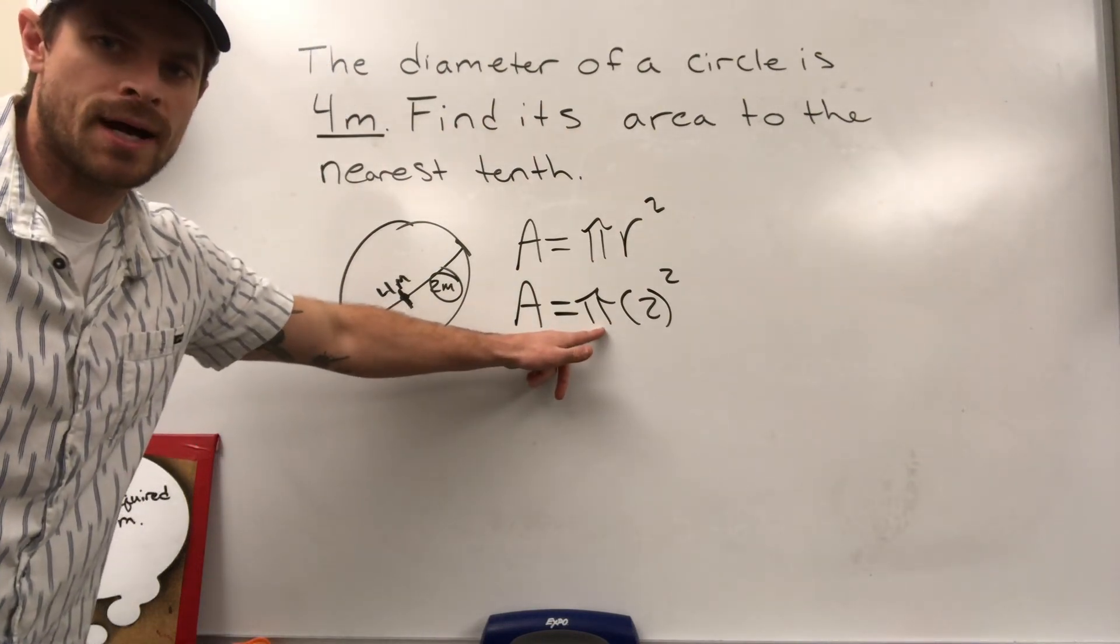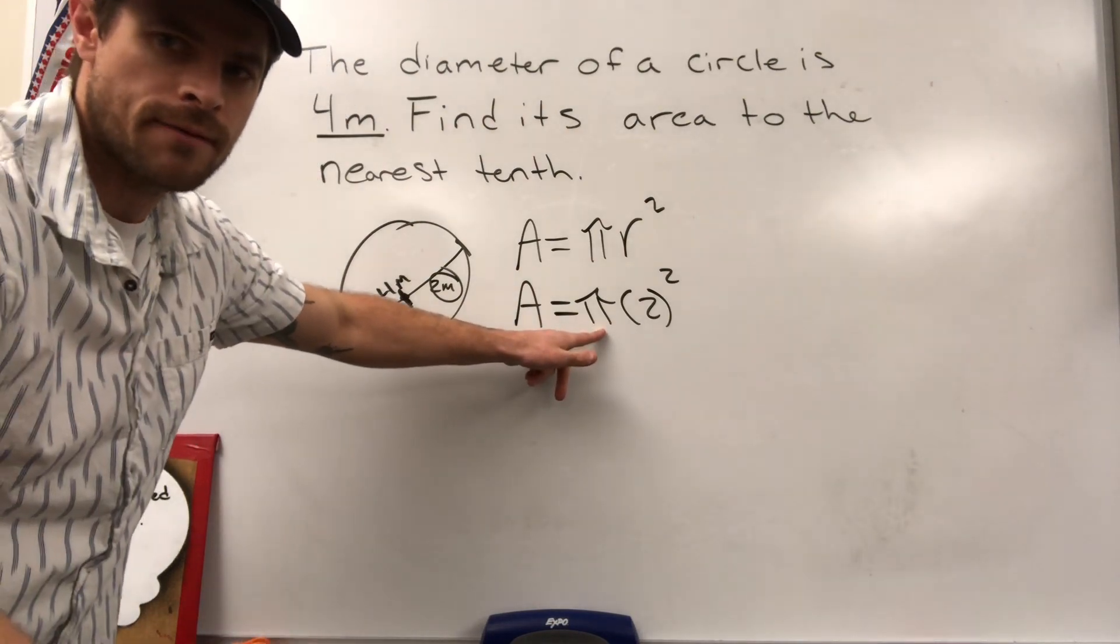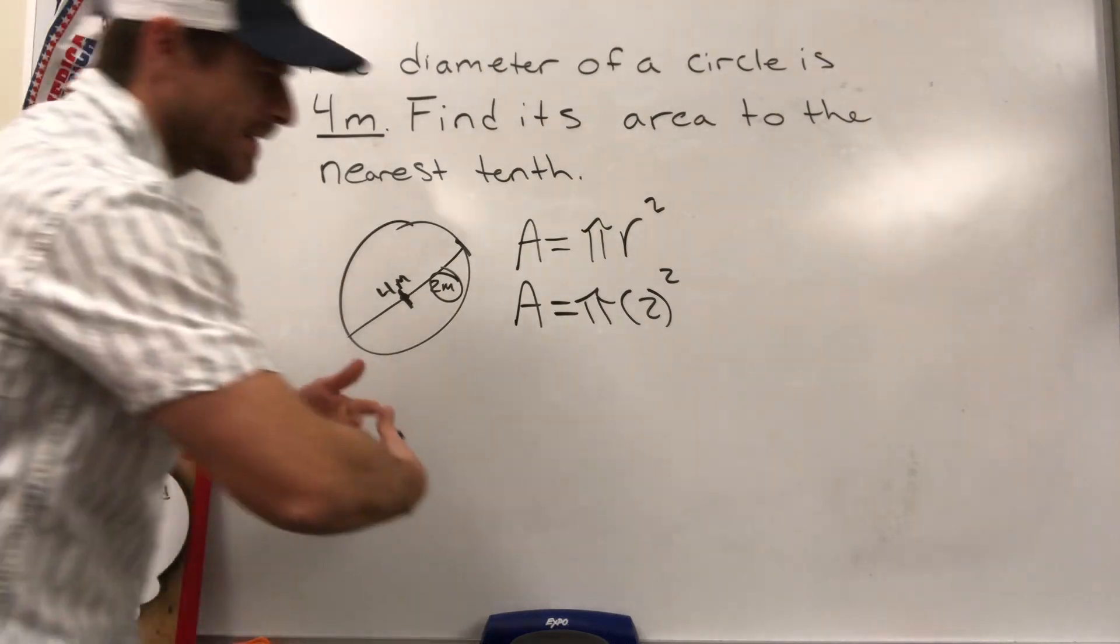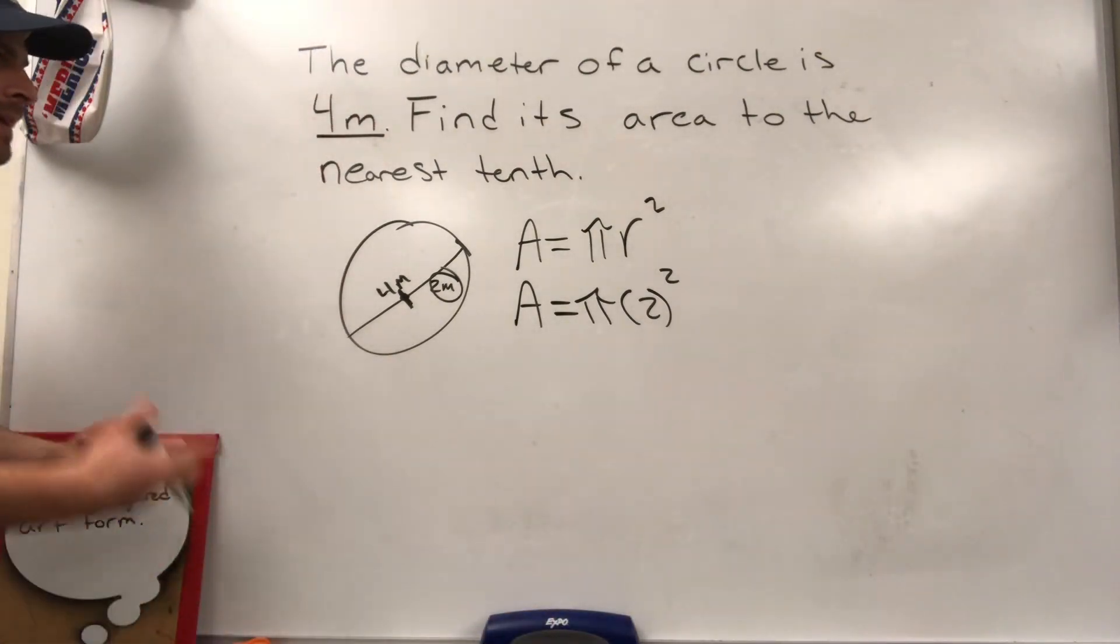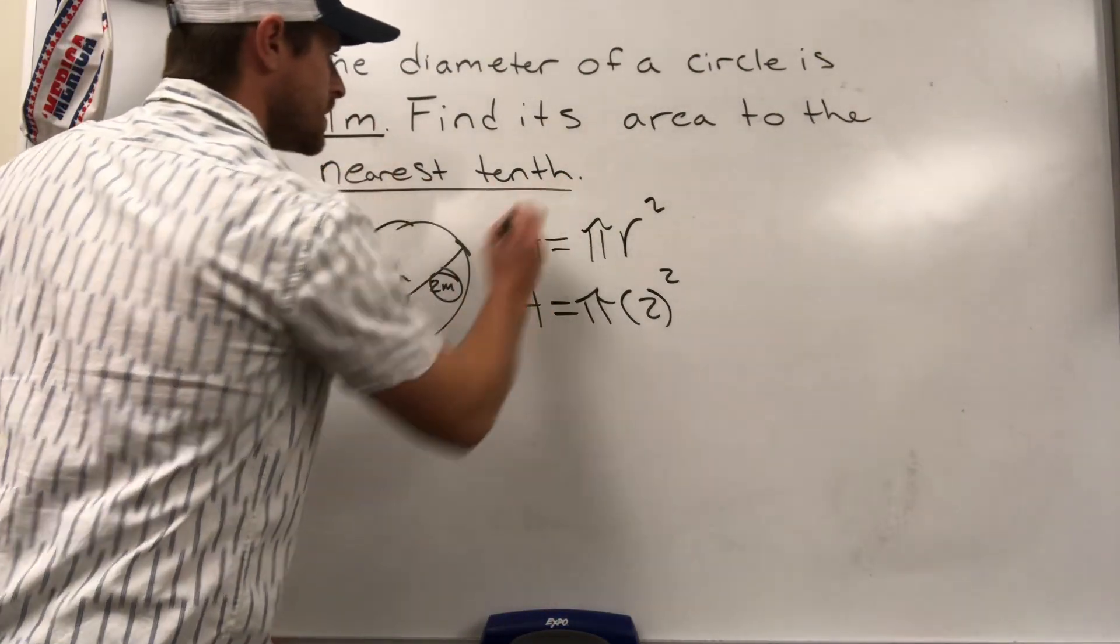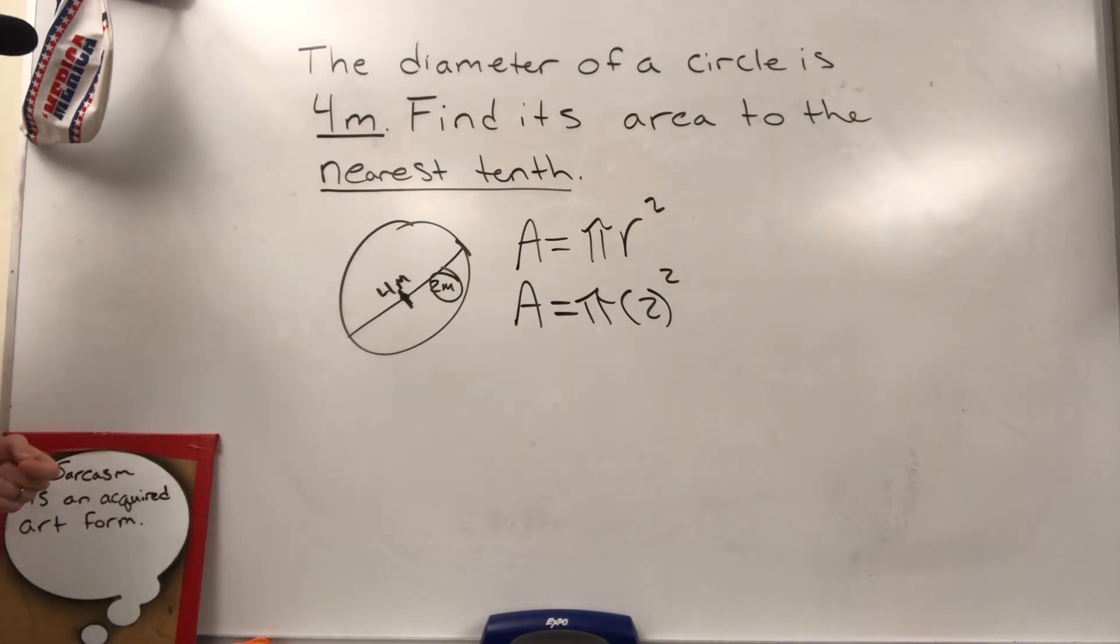Because we're multiplying by pi, which is a number that goes forever and ever, never ends. We're going to get a decimal that goes forever and ever, never ends. And they want us to round it to the nearest tenth place. I'll show you how to do that in just one second.